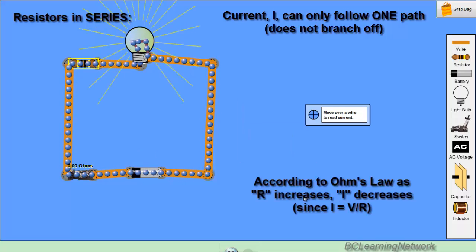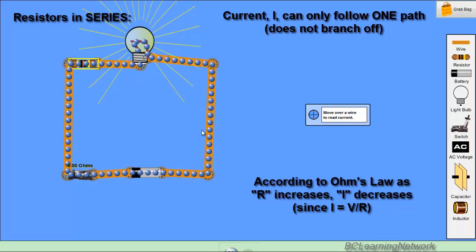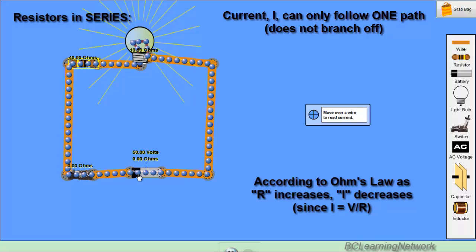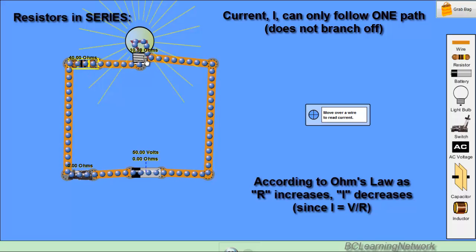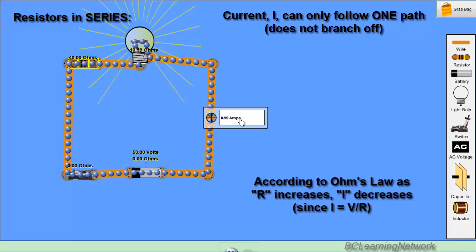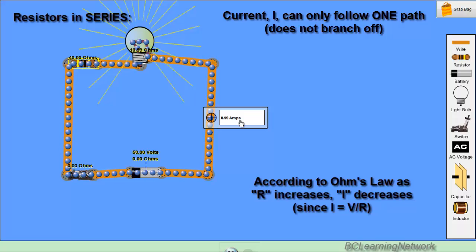Now the question we want to answer is what happens to the overall current flow if we add another resistor in series. So to do that, we'll measure the original current flow. If we see some of our values here, I've got a 50 volt battery supply, a 40 ohm resistor, and roughly a 10 ohm bulb. And if I put my current meter over there, it's around 1 amp, 0.99 amps to start with. Now don't worry about the numbers for now, let's just see what happens to the current as we add another resistor.